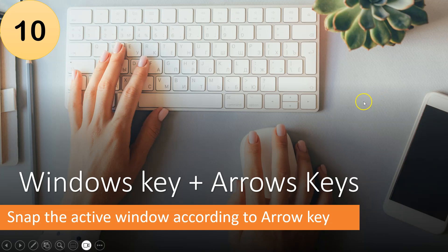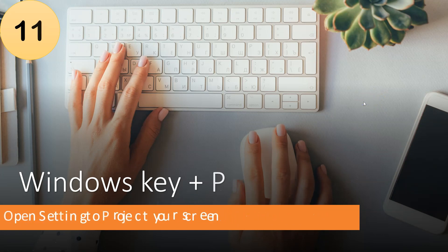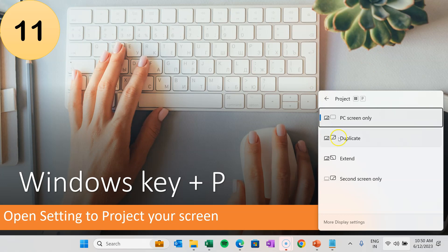The next shortcut key is Windows key plus P. If you want to project your screen to a projector, press Windows key plus P. The project screen panel will open and you can choose to show PC screen only, duplicate, extend, or second screen only.